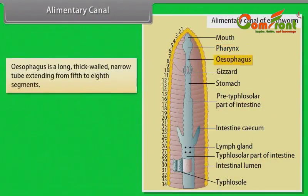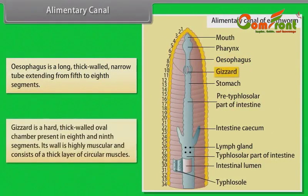The oesophagus is a long, thick-walled, narrow tube extending from the fifth to eighth segment. The gizzard is a hard, thick-walled oval chamber present in the eighth and ninth segments. Its wall is highly muscular and consists of a thick layer of circular muscles.